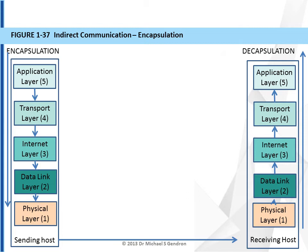So in that way, a message is encapsulated down through layers 5, 4, 3, 2, and then layer 1 will propagate that message across the network to the physical layer on the receiving host, and the receiving host will decapsulate the message back up through layers 1, 2, 3, 4, 5, until it gets the original message back to the application that was intended to receive it.